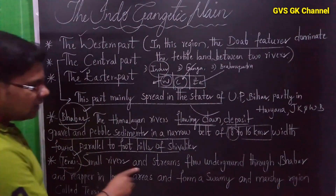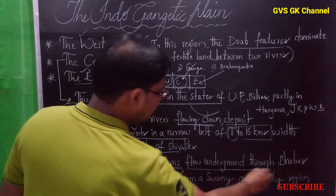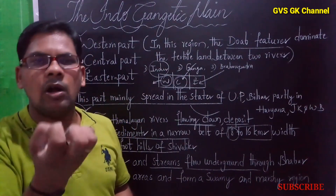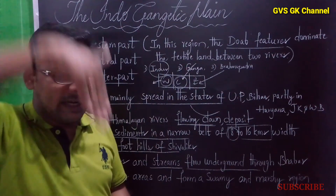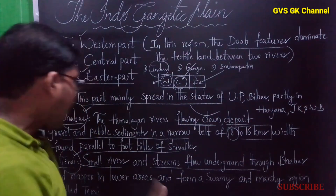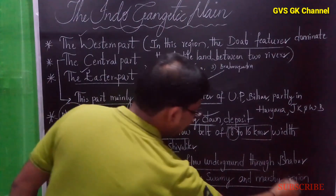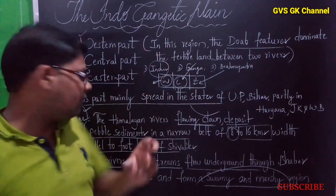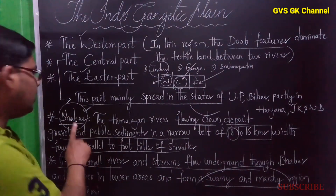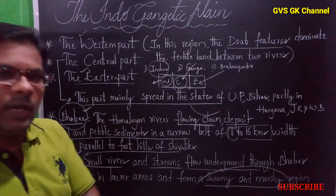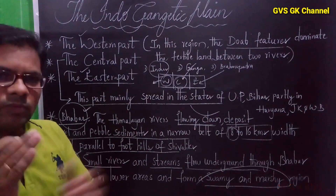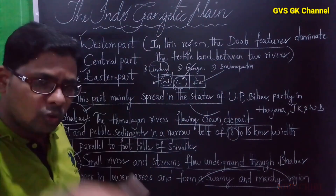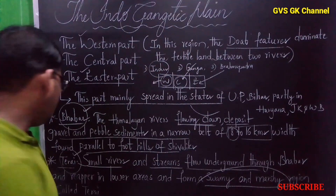The next feature is Terai. Small rivers and streams flow underground through the Bhabar, which is porous in nature — meaning it can absorb water. The water goes down into the Bhabar region and reappears in the lower areas, forming a swampy and marshy region called Terai. This is the difference between Bhabar and Terai.